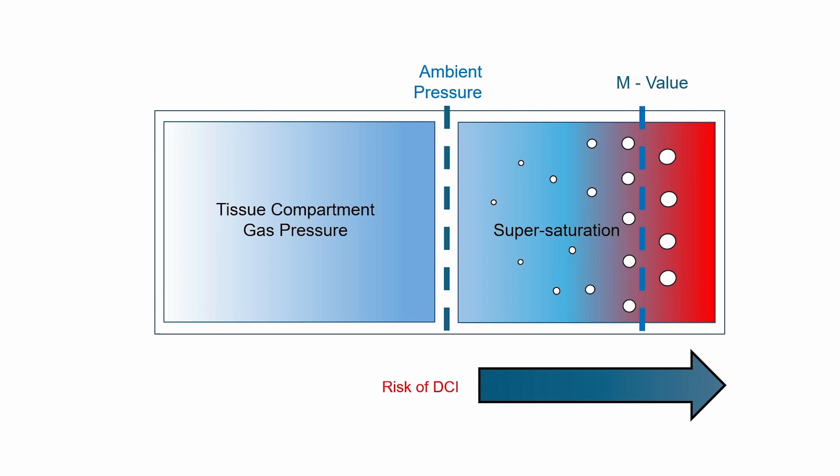Think of the M value as the absolute ceiling. If you go higher than the M value - i.e. your tissue becomes more supersaturated than the M value - then you have an unacceptable risk of decompression illness. That's effectively what Bühlmann said: here's the ambient pressure, above the ambient pressure is an amount of saturation that your tissues can tolerate, but if you go more than the M value then you're into a risk of decompression illness.